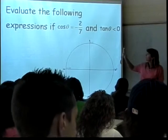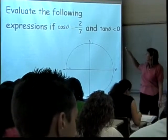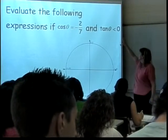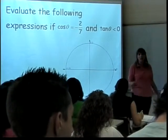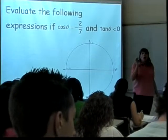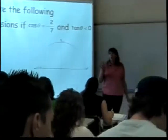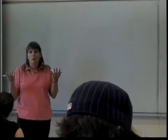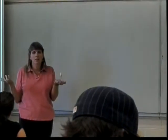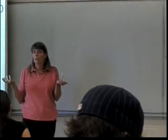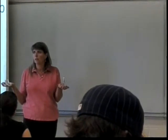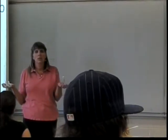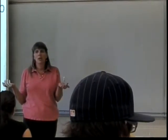I know that the cosine of theta is negative 2 over 7 and that the tangent of theta is less than 0. That means the tangent is negative. Using my circle stuff, what was the formula that I used to figure out the other non-easy trig functions? What's the formula I used on Friday? It was an easy one. It's called the Pythagorean Identity.